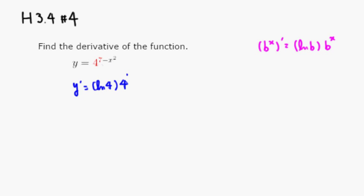Leave the inside function as it is. So it's 7 minus x squared. Then multiply by derivative of the inside function. Derivative of 7 is 0. Derivative of negative x squared would be negative 2x.